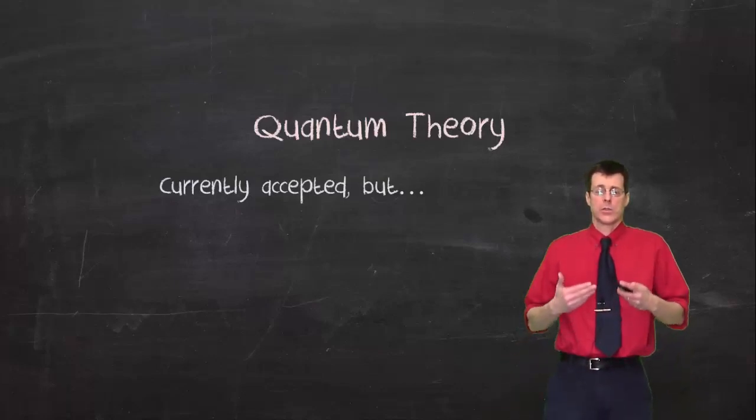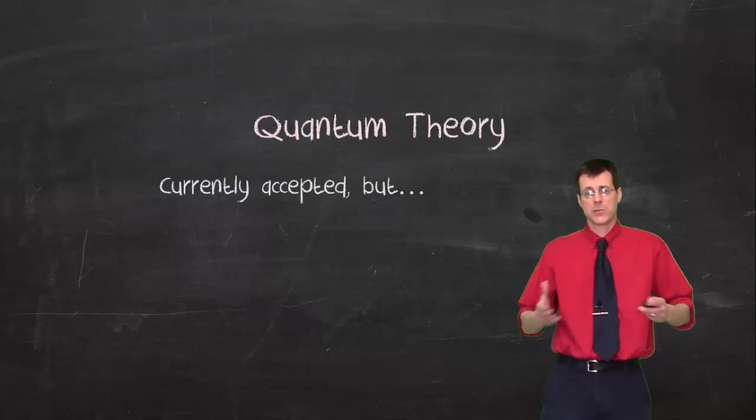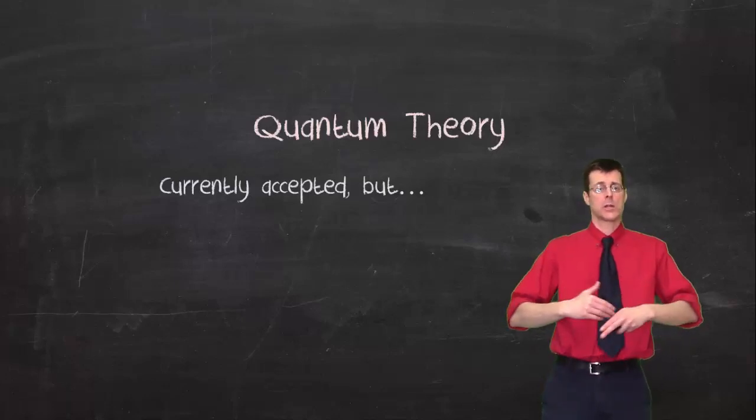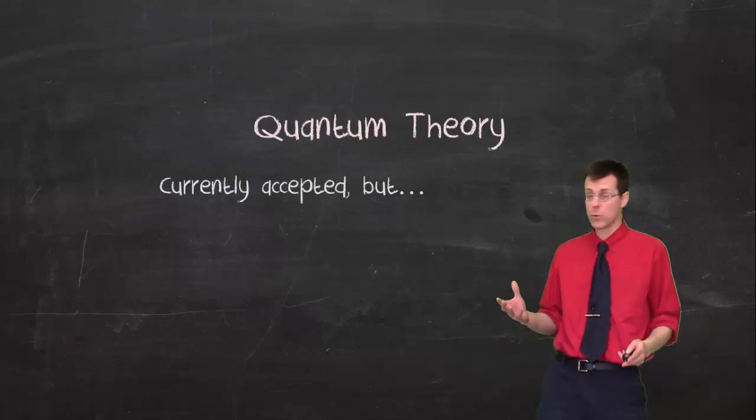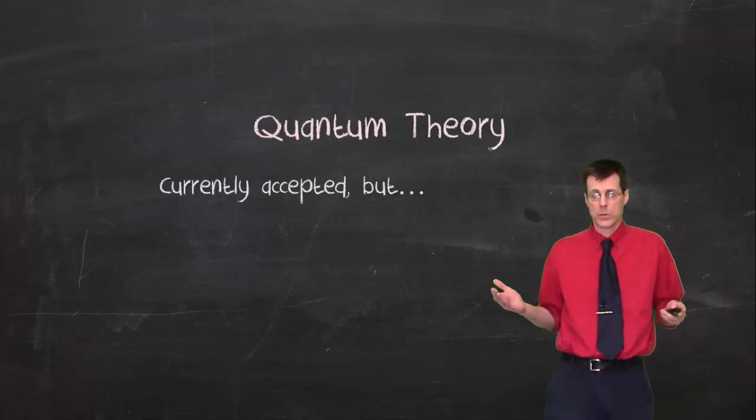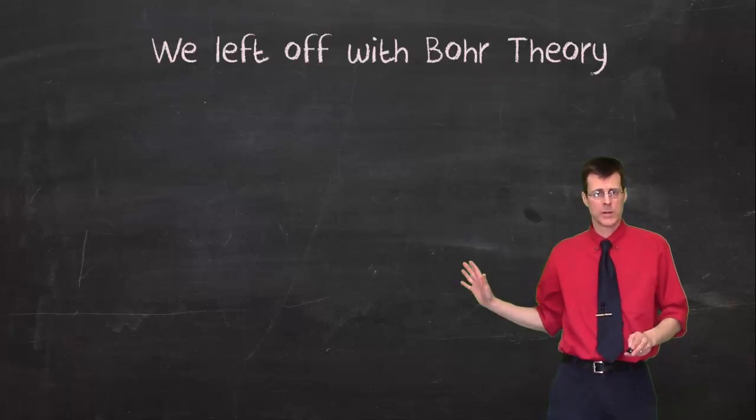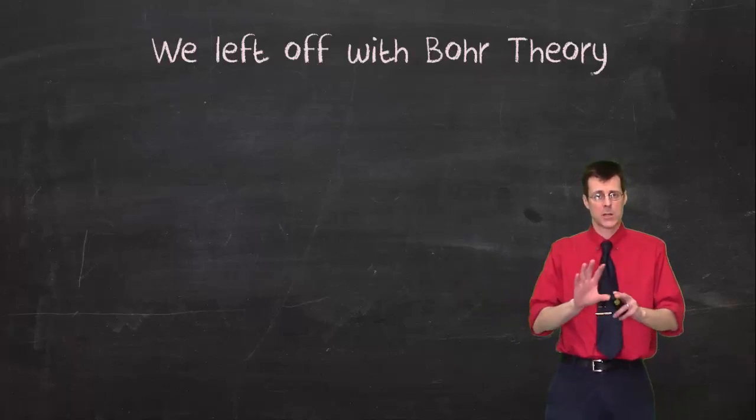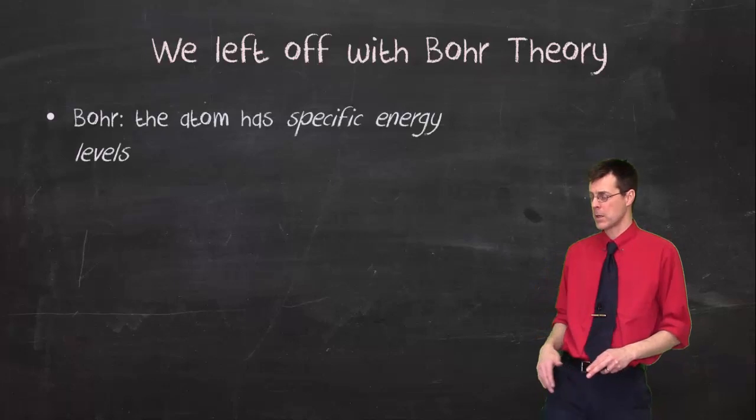So today we're talking about quantum theory, which is the currently accepted model of the atom. But I want you to understand our limitations as people trying to describe the world around us. And no matter how good our theory is, it's never going to be perfect. So we will still have limitations. However, you don't need to write any of this Bohr theory down, but just to kind of reset the stage and put this back into context.